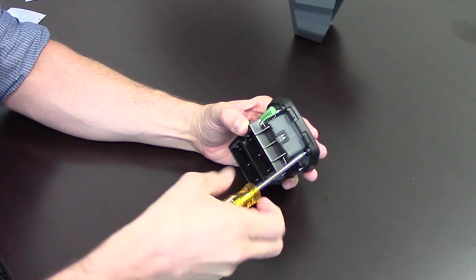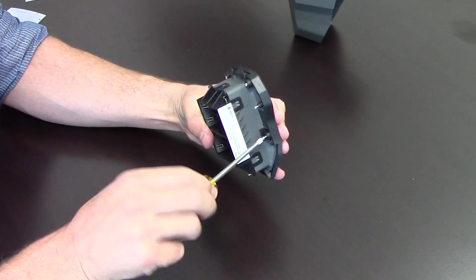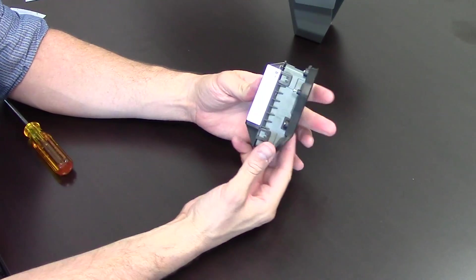Reassembly is opposite of disassembly. Tighten the four screws on the back of the device. Insert the Motion Viewer back into the housing and tighten the screw.